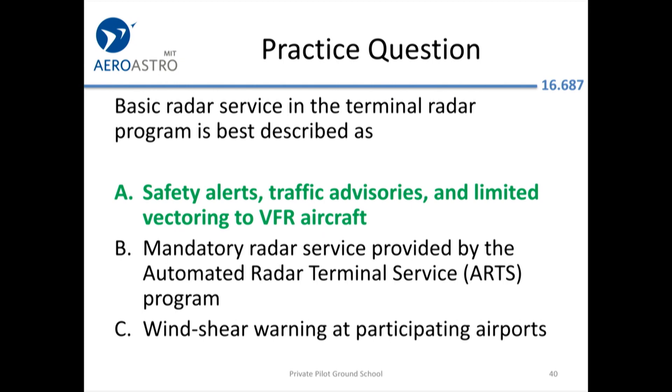A couple of practice questions. This one is about basic radar service — what are they providing when you call up and ask for flight following? They're providing safety alerts, traffic advisories, and sometimes vectoring. Vectoring means if there's traffic at 12 o'clock, three miles — right in front of you — and you still can't see it after they call it out again at two miles same altitude, and you say 'negative traffic,' they'll give you a heading: 'heading 360' or 'turn 10 degrees left.' That is what is meant by limited vectoring — they'll tell you what to do briefly to avoid something dangerous.